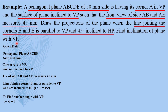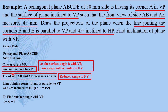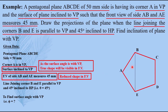Let us analyze the given data. Surface inclined to VP suggests the true shape will be visible in the front view. One more hint: the front view of sides AB and AE measures 45mm, meaning a reduced shape is in the front view. This is the only position possible for the pentagon in which corner A is in VP on the left, such that when you incline the surface with VP, sides AB and AE get reduced by the same amount and measure 45mm in the front view. So this is the position you have to take for the true shape.